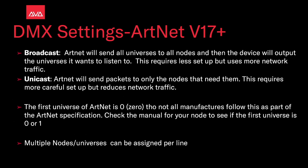Types of ArtNet. Broadcast: ArtNet will send all universes to all nodes, and the device will output the universes it wants to listen to. This requires less setup but requires more network traffic. Unicast: ArtNet sends packets only to the nodes that need them. This requires more careful setup but reduces network traffic. The first universe of ArtNet is zero, though not all manufacturers follow this as part of the ArtNet specification — check the manual for your node to see if the first universe is zero or one. Multiple nodes and universes can be assigned per line. See our video on assigning ArtNet — link in the description.